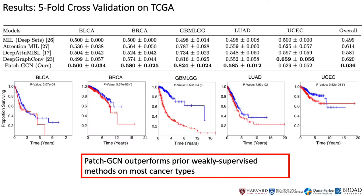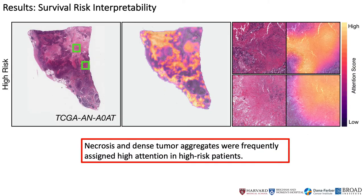We validate our method on five large cancer datasets from the TCGA and compare against some current state-of-the-art approaches in weakly supervised deep learning and pathology using our own internal benchmarks. In our experimentation, we find that PatchGCN outperforms prior weakly supervised learning methods on most cancer types, which demonstrates the potential of using GCNs for learning context-aware prognostic information. In examining interpretability of PatchGCN, we observe that instance-level features are adaptively averaged in our neural network, in which the high-attention region localizing necrosis in this high-risk patient is also including normal tissue in its periphery. Further interpretability and discussion can be found in our conference paper.